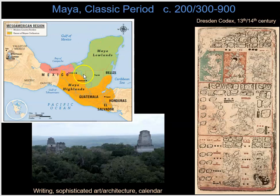In the Yucatan Peninsula, for example, we have the Maya lowlands, and we also have the highlands, in particular running into Guatemala.